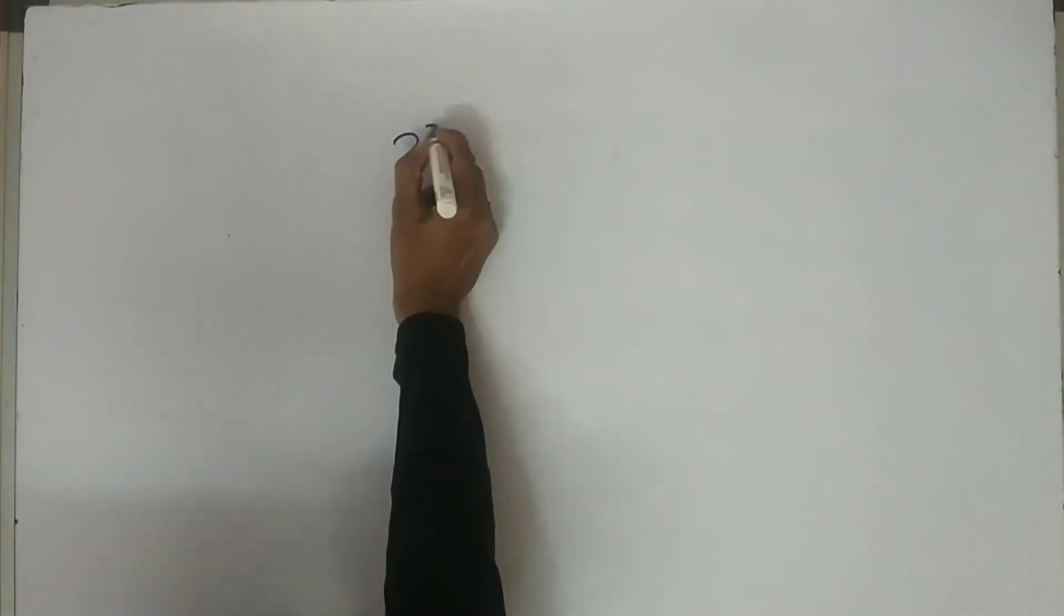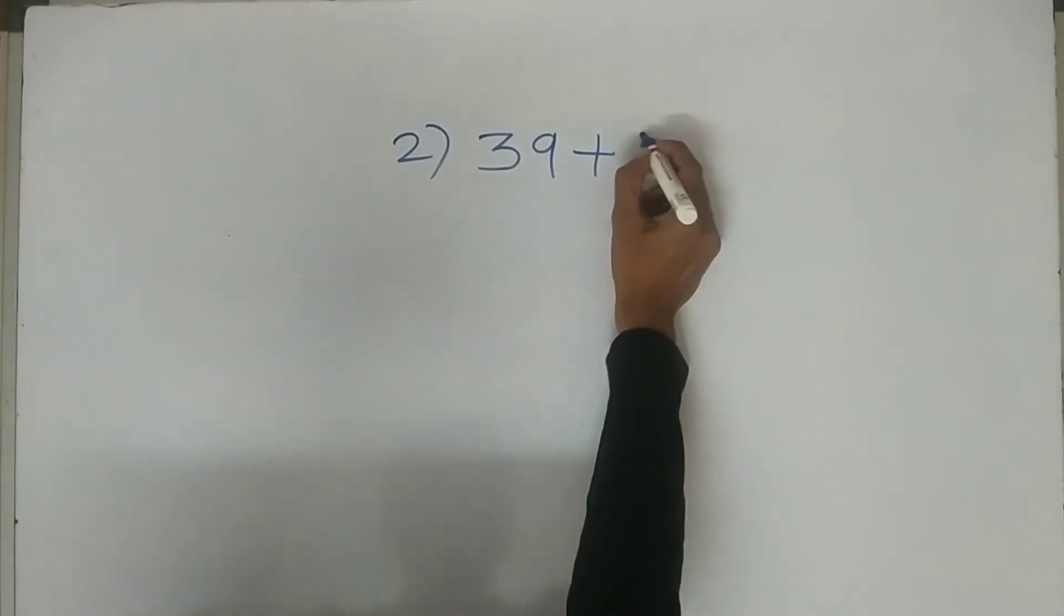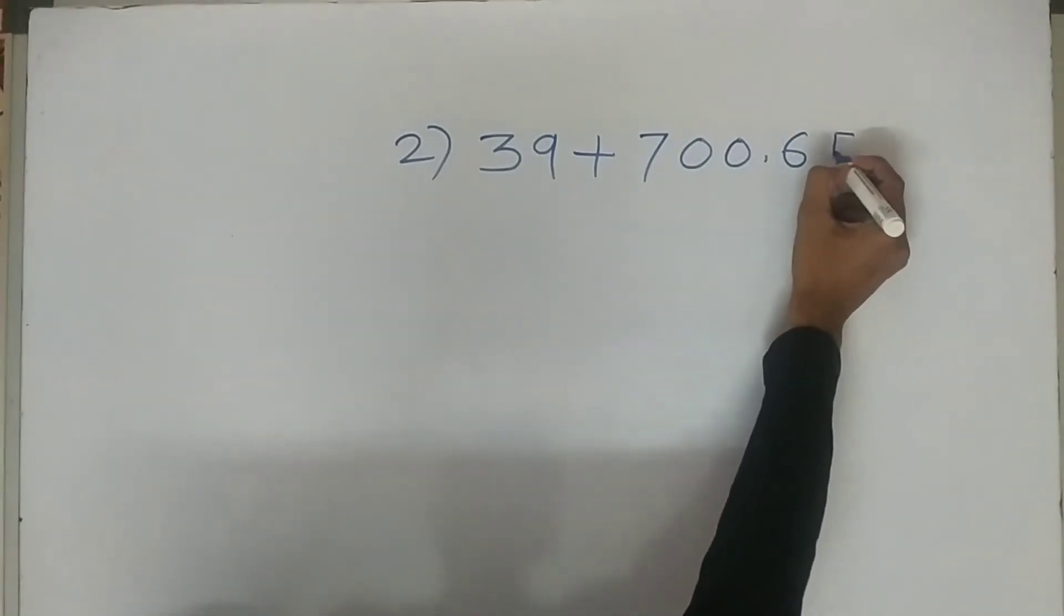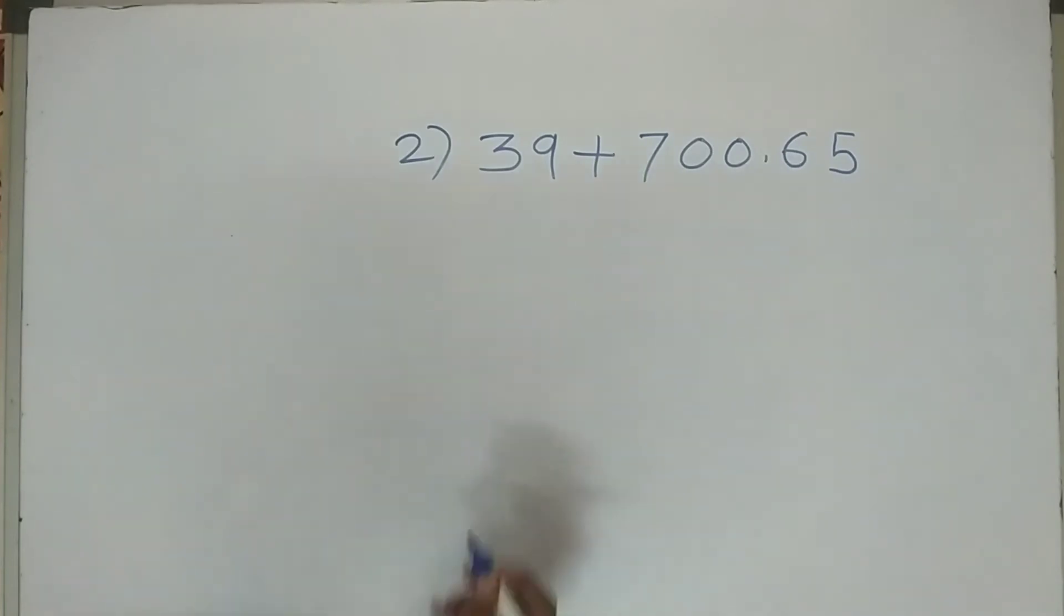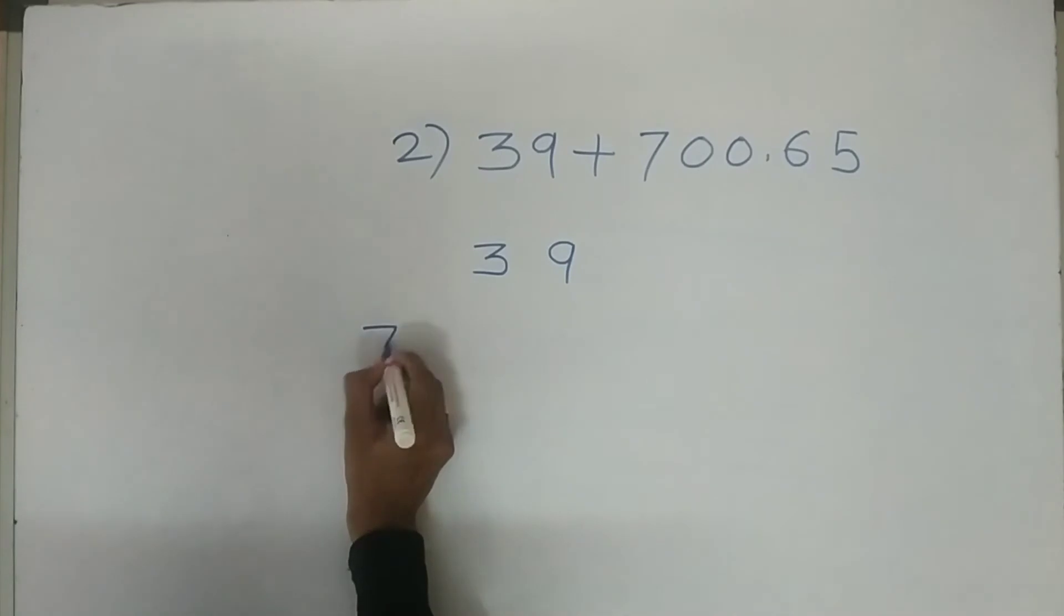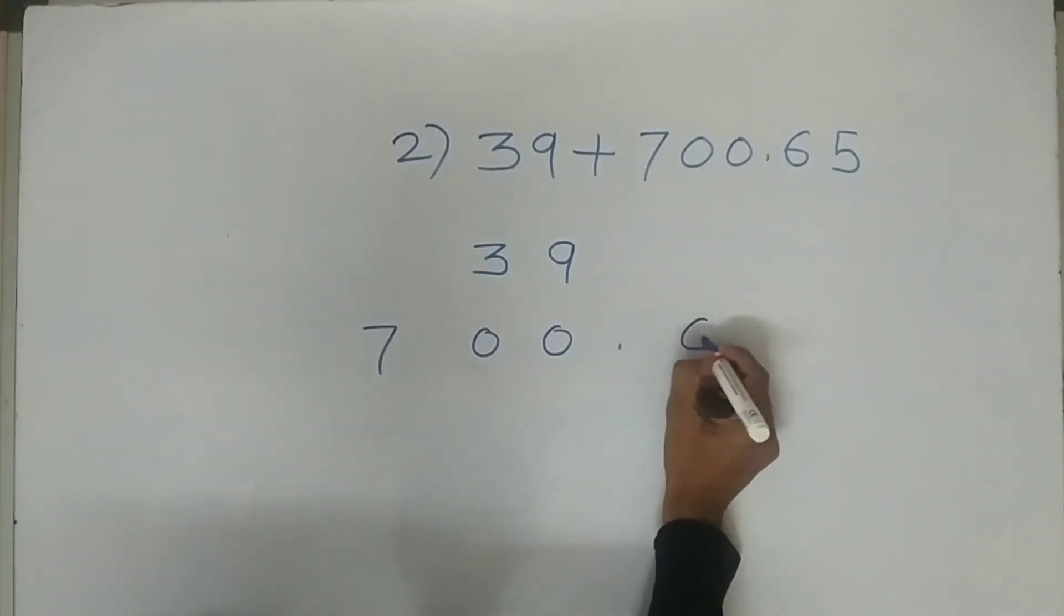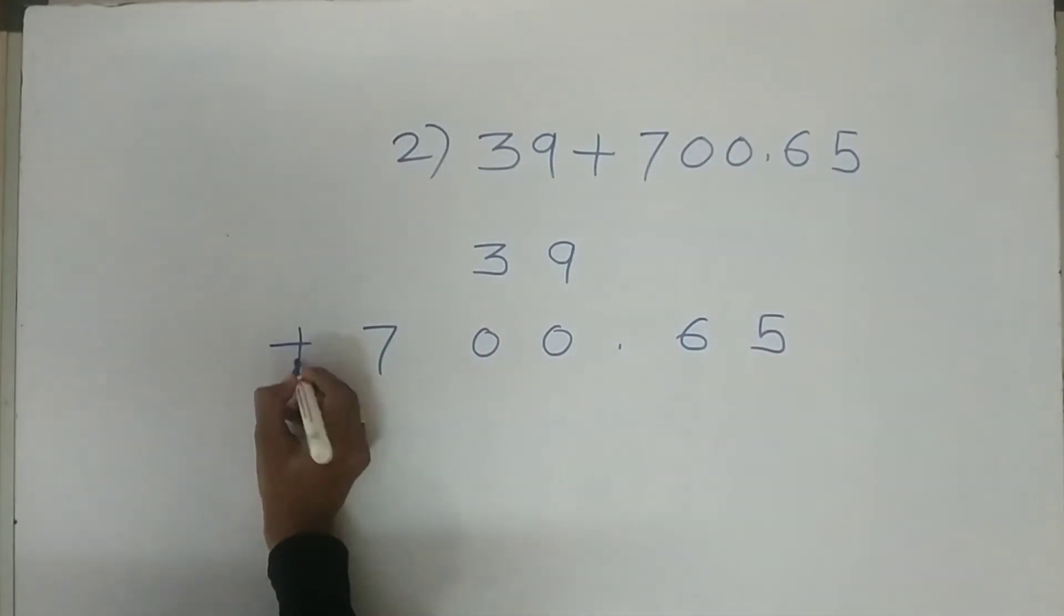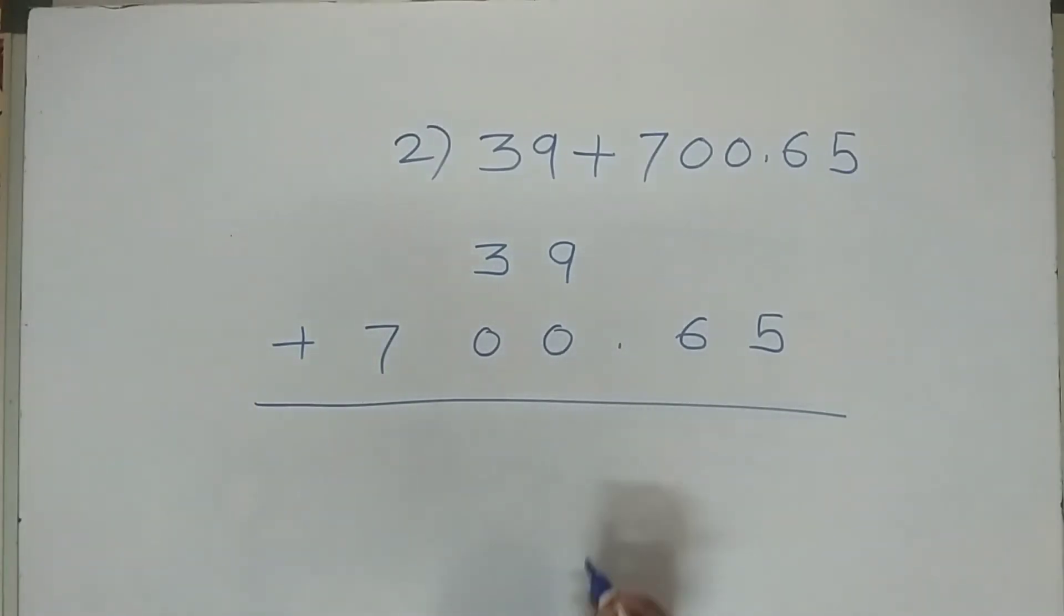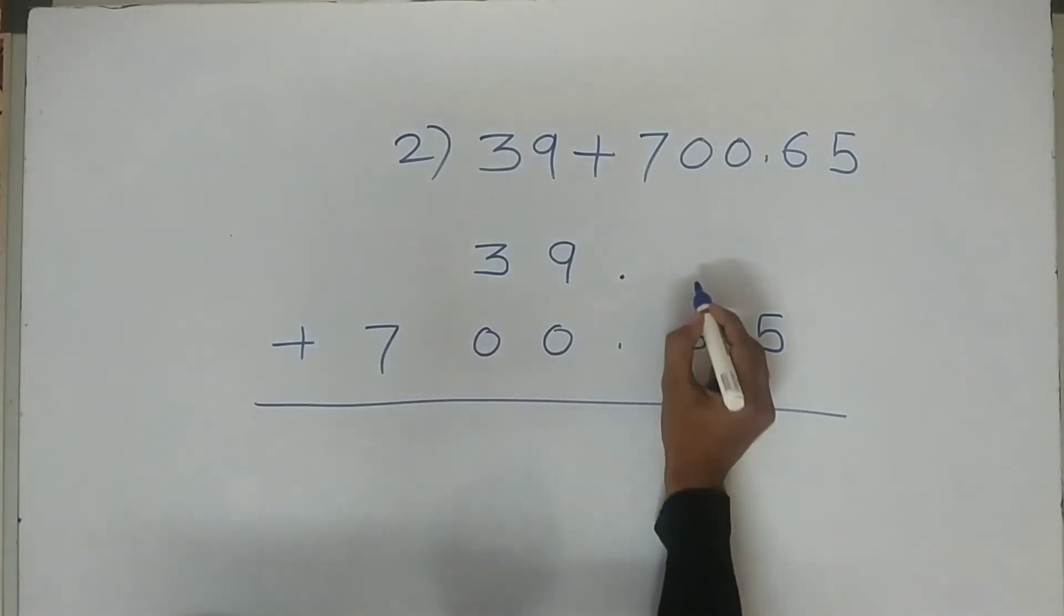Second example: thirty nine plus seven hundred point six five. Let's add both numbers: 39, 700.65. If there's no decimal point shown, we write zero.